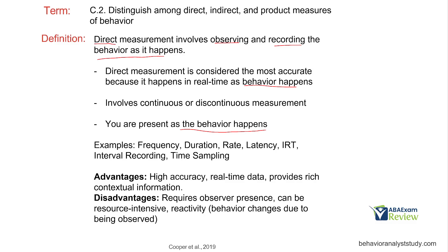Some advantages of direct measurement: high accuracy — you're going to get the best accuracy when you are actually watching the behavior in real time. It gives you real-time data so we can see what's going on as it occurs. And we get real contextual information — we can see those antecedents, we can see those consequences, and we can form those good ABC connections. With direct measurement, we get all of those extra details.